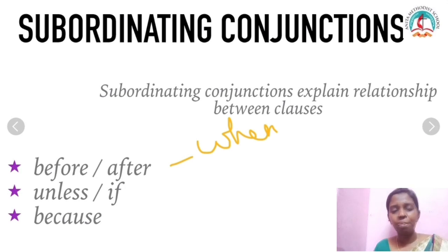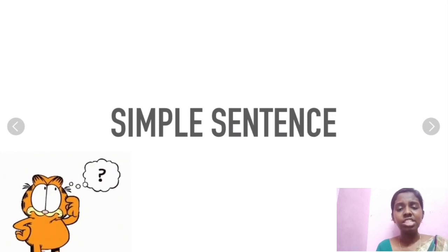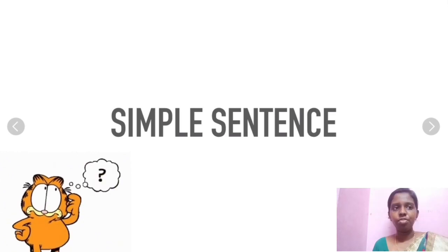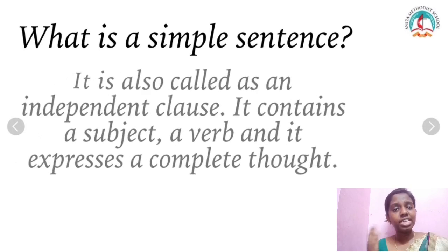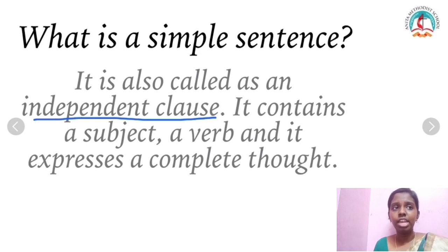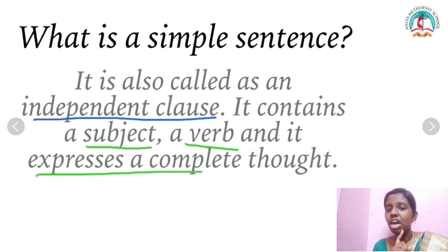Let's get into today's topic and see the different structures. We will see one example each for simple and compound sentences, and then for complex sentences — which is the main focus today — we will see a few examples. A simple sentence is also called an independent clause. It contains a subject, a verb, and it expresses a complete thought. An independent clause can stand on its own.